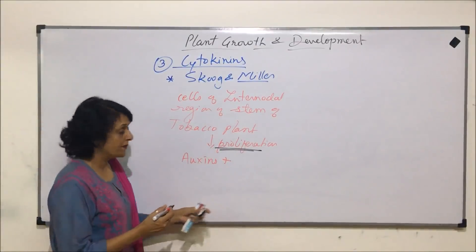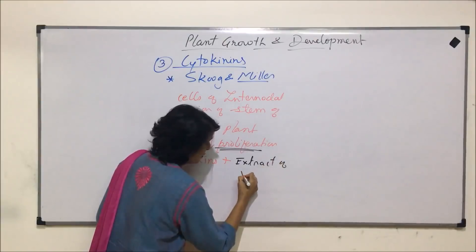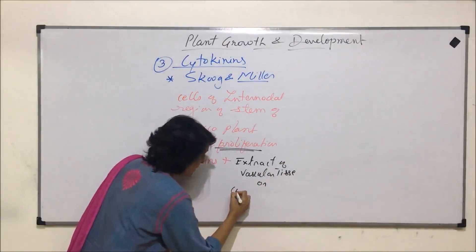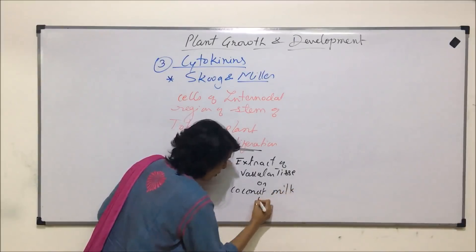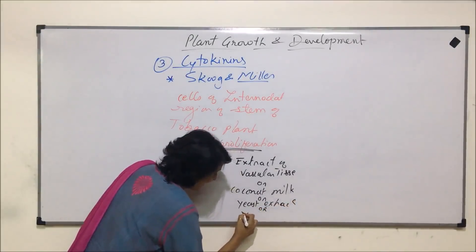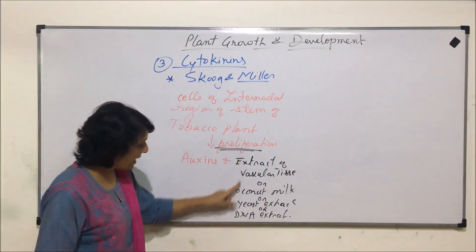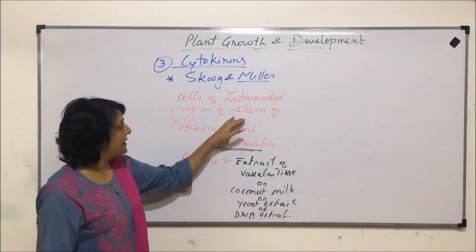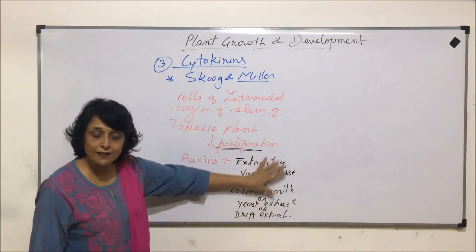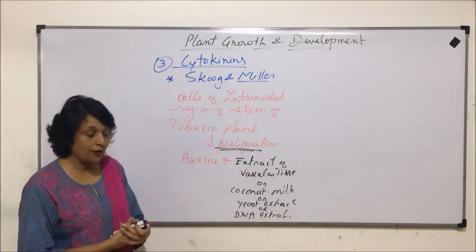What were those substances? Those substances were the extract of vascular tissue, or coconut milk, or yeast extract, or DNA extract. That means whenever auxin and any one of these things were added together, these cells showed proliferation or cell division. That means in these substances there is something which, with auxins, helps in cell division.